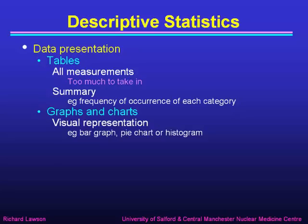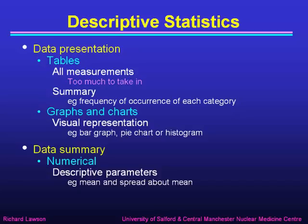Graphs and charts are a good way of representing data visually, and we should look at bar graphs, pie charts and histograms as examples of this. Data summary is important by giving numerical data — descriptive parameters that will summarise the data in a few numbers. Examples of that are the mean of the measurements and the spread about the mean, and we shall look at those in this lecture.